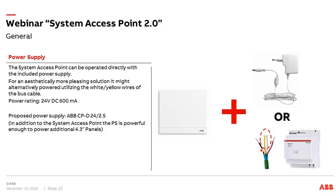In general, the system access point requires 24V. You can use the power adapter on the bottom side, or you can power it with the white and yellow wire of the bus cable — which may be the more practical solution when mounting it on a wall or in a cabinet. For that, we recommend the ABB CPD 24 power supply, which can also power additional 4.3-inch panels. This should be the preferred solution when planning a new project with wired installation.